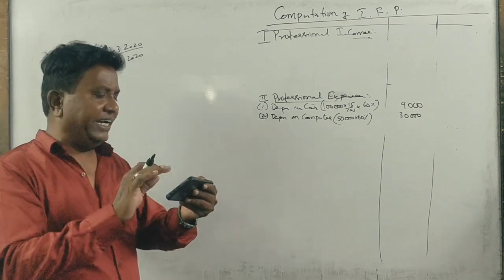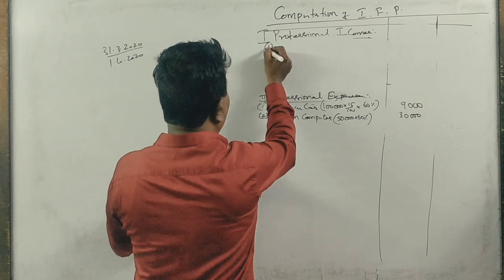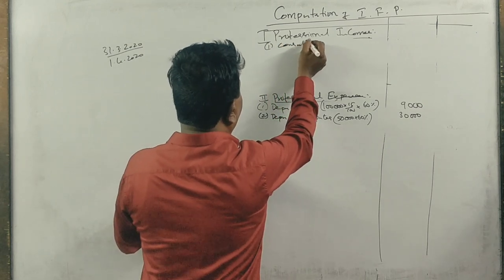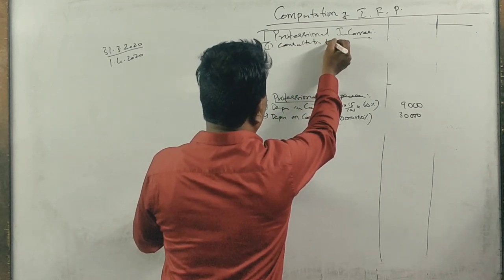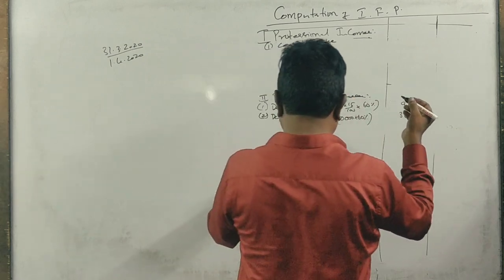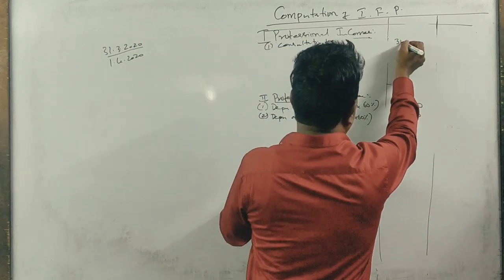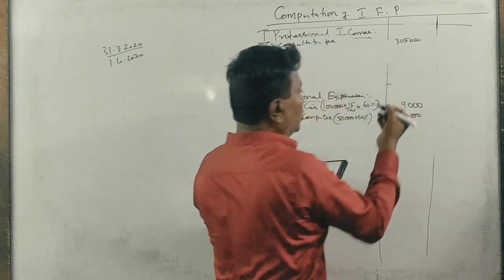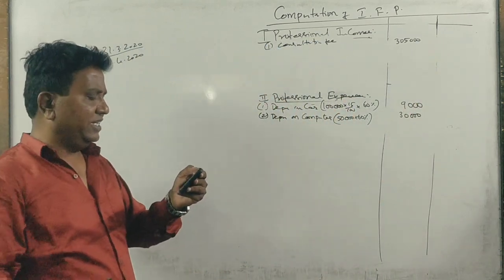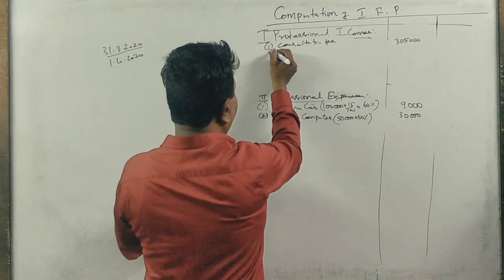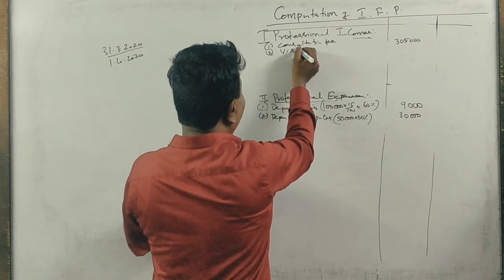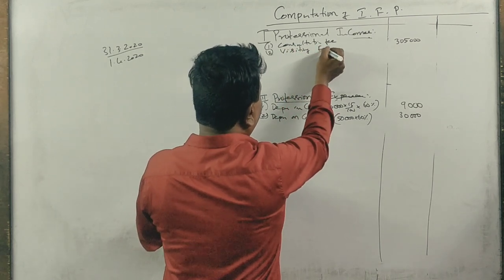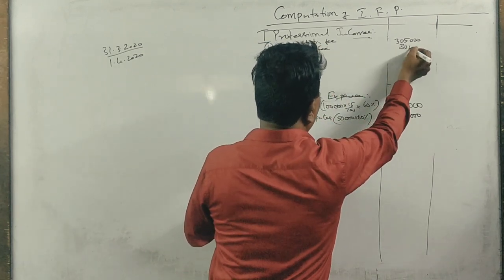Now look at the debit side: consultation fee, total money is 2,80,000 and 3,50,000 - that's 2,80,000 plus 3,50,000. Next is visiting fee, 80,000.